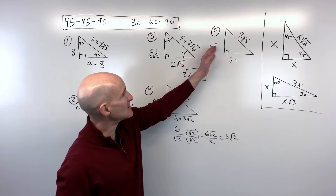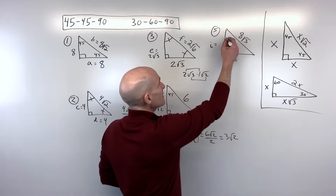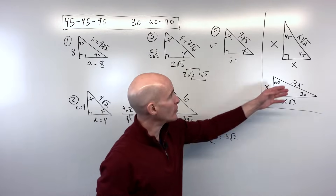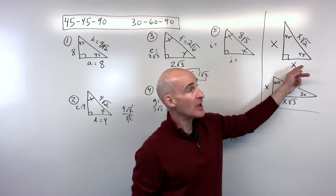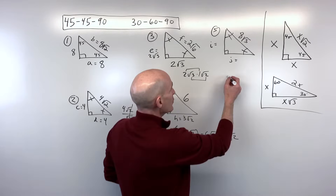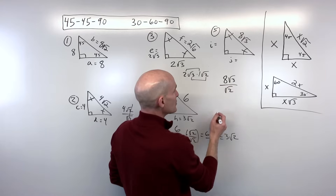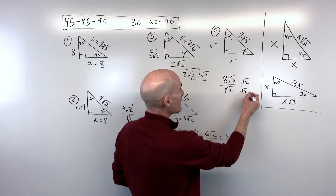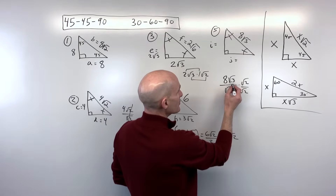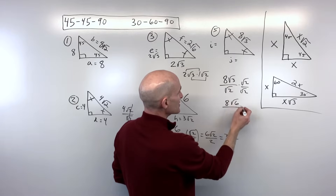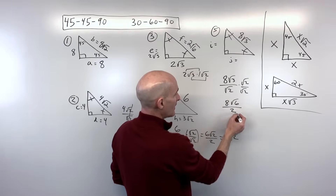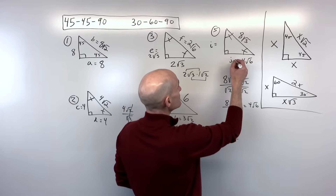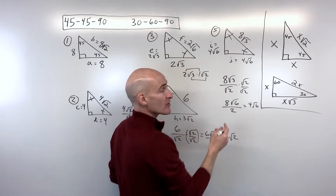For the last 45-45-90 example — a little more challenging — the hypotenuse is 8√3, and we want to go back to the leg by dividing by √2. We don't want the radical in the denominator, so we rationalize by multiplying top and bottom by √2. That gives us 8√6 over √4, which is 2. The 8 and 2 reduce: 4 goes into 8 twice, giving us 4√6 for both legs j and i, since the legs are congruent.